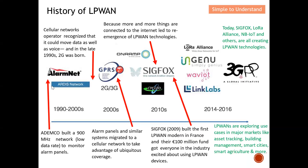Something similar to LPWAN actually existed in the 1990s. A company called Alunet built a 900 MHz network to monitor alarm panels. Because of this, cellular network operators realized that the network could move both data and voice, and therefore in the late 1990s, 2G was born. After 2G was born, alarm panels and similar systems migrated to the cellular network in order to take advantage of the wide coverage.